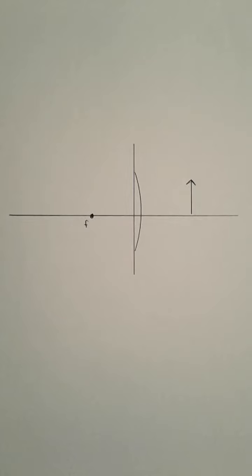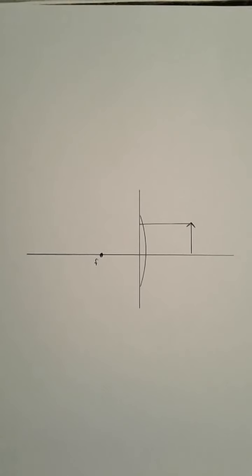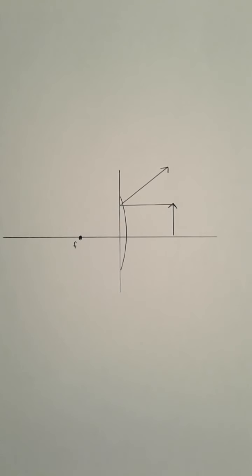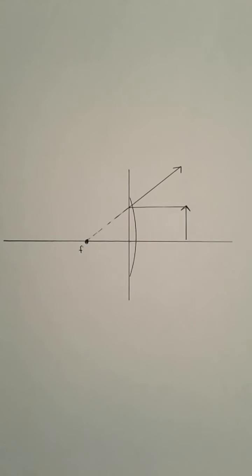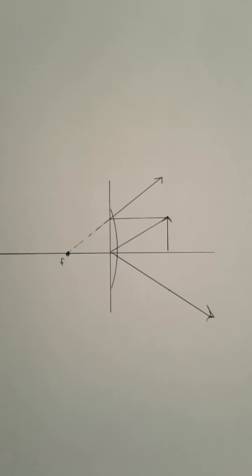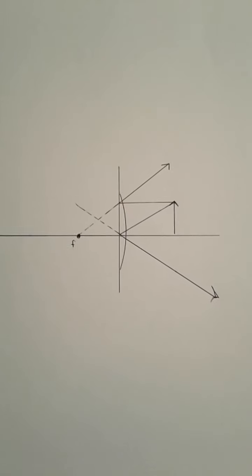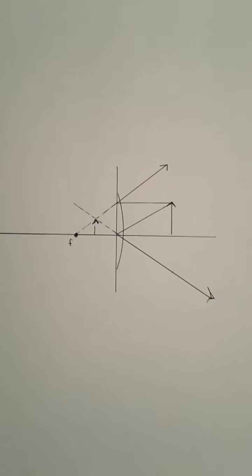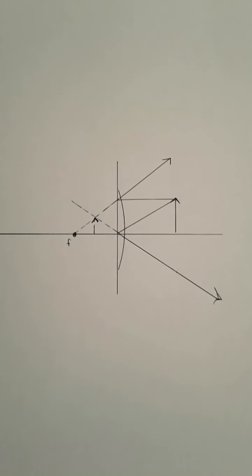So what happens when we move closer to the convex mirror. The light ray goes in parallel to the principal axis and reflects away from the virtual focus. If the next light ray goes into the center it'll reflect away the same angle. And I can trace that light ray back. The intersection is where I believe the image is.